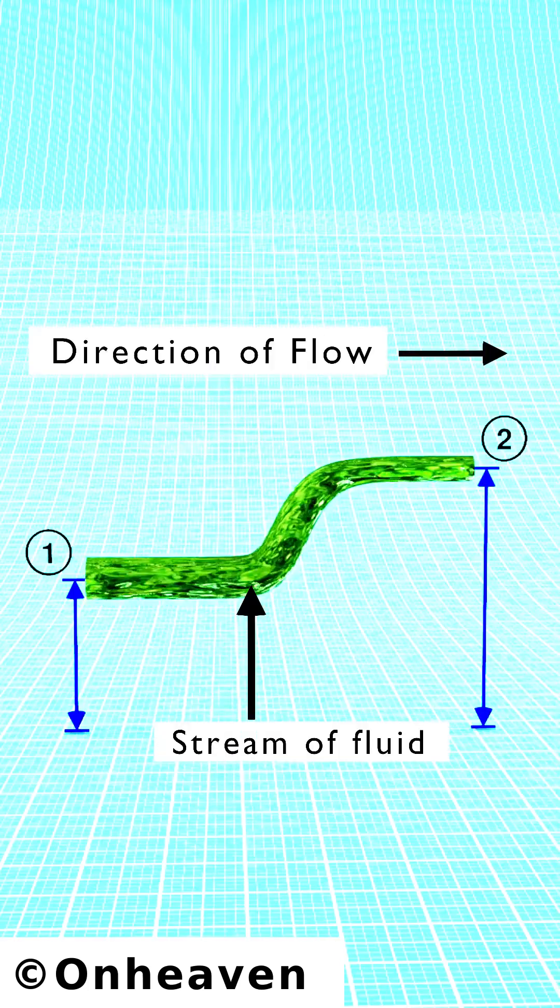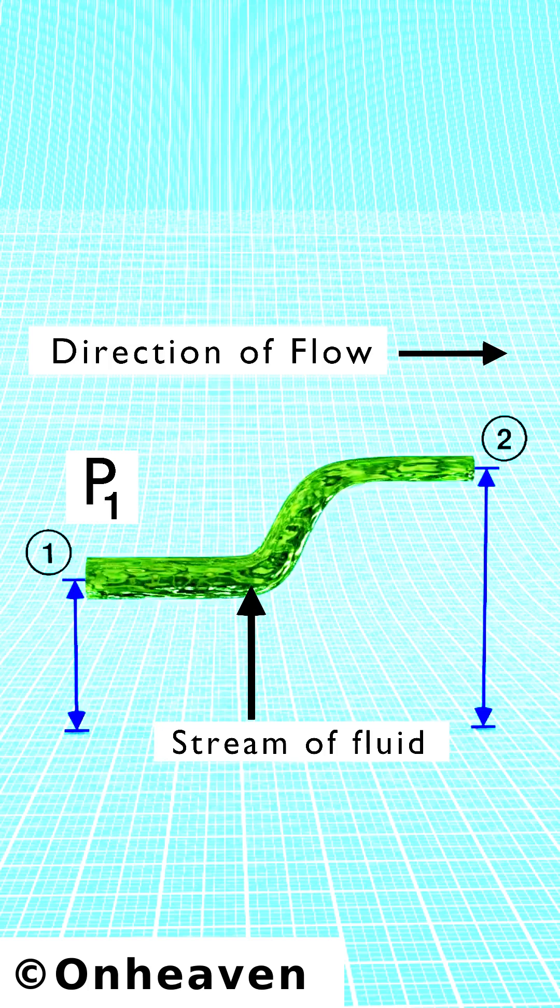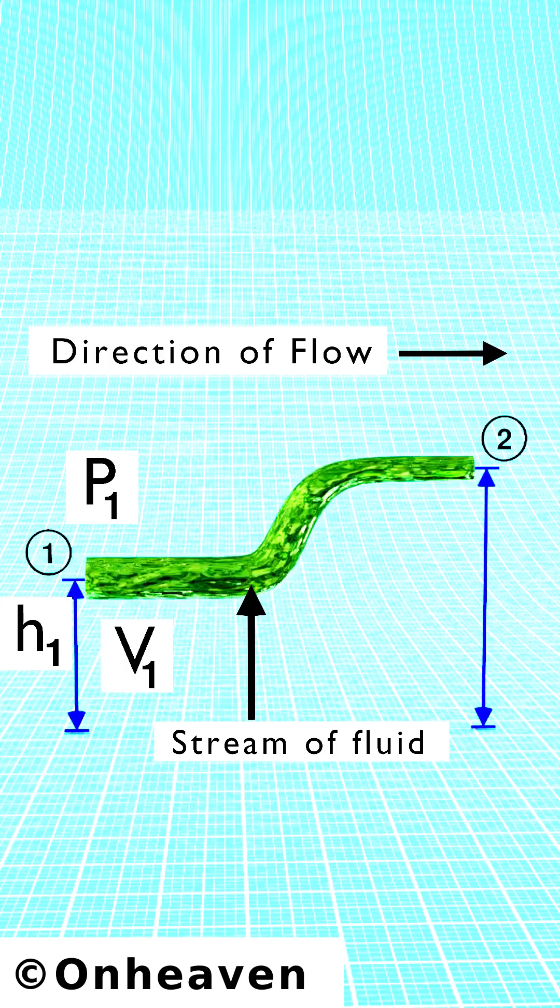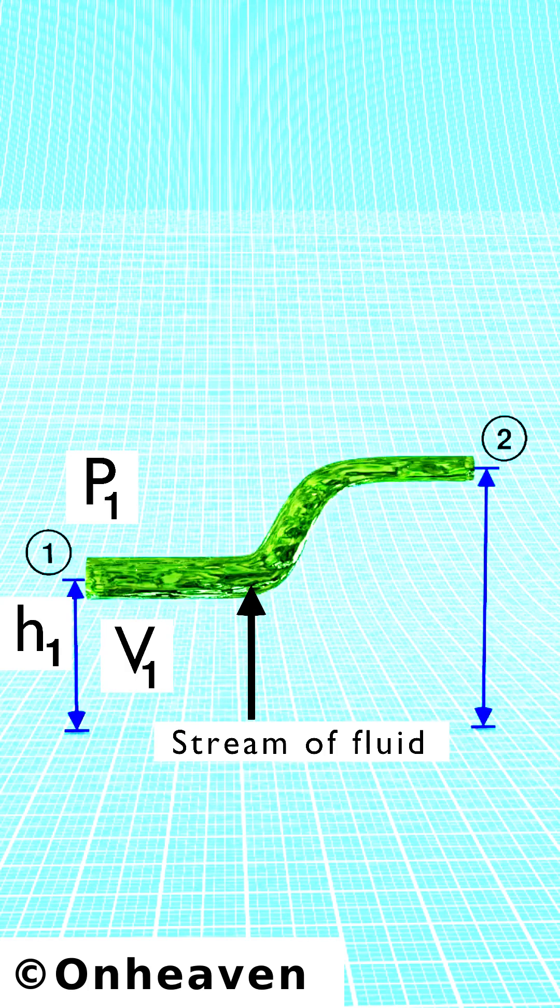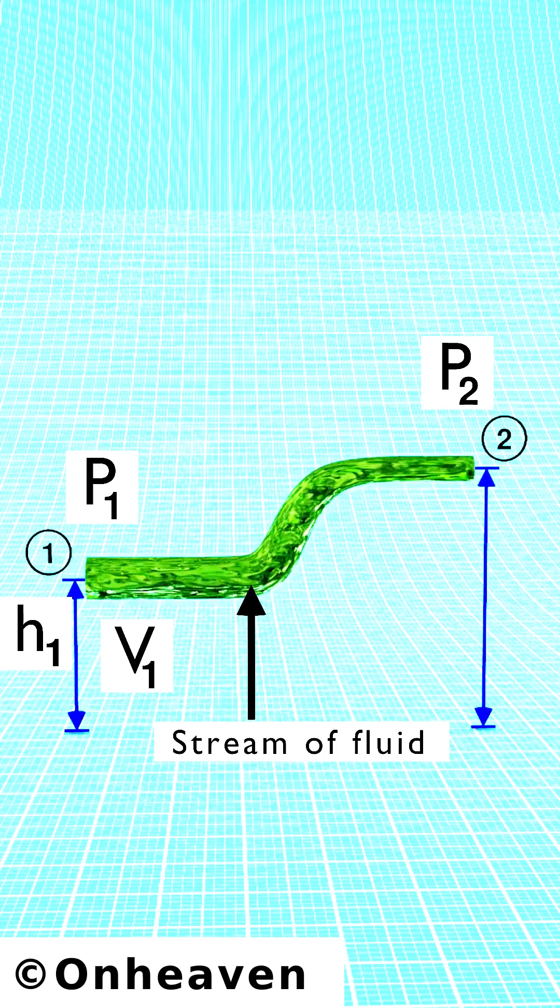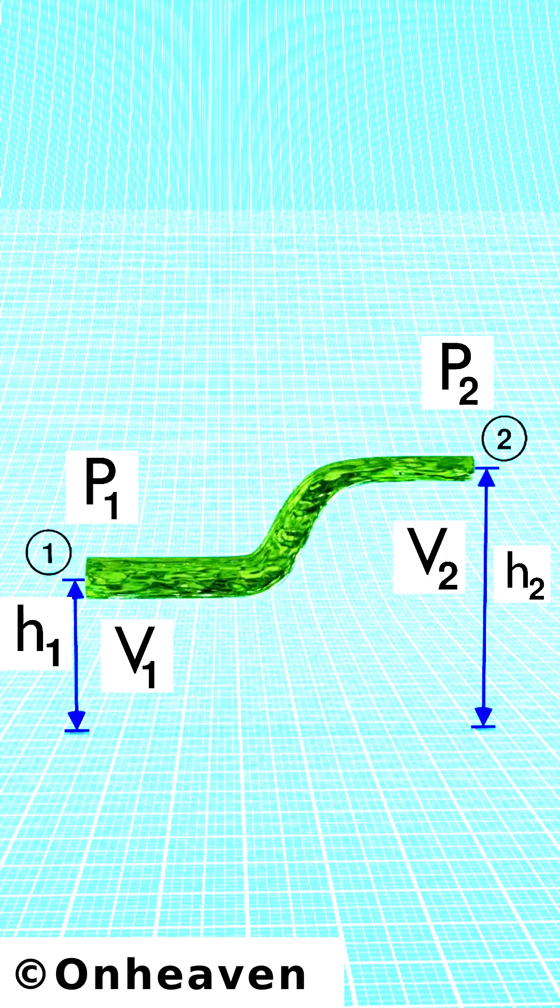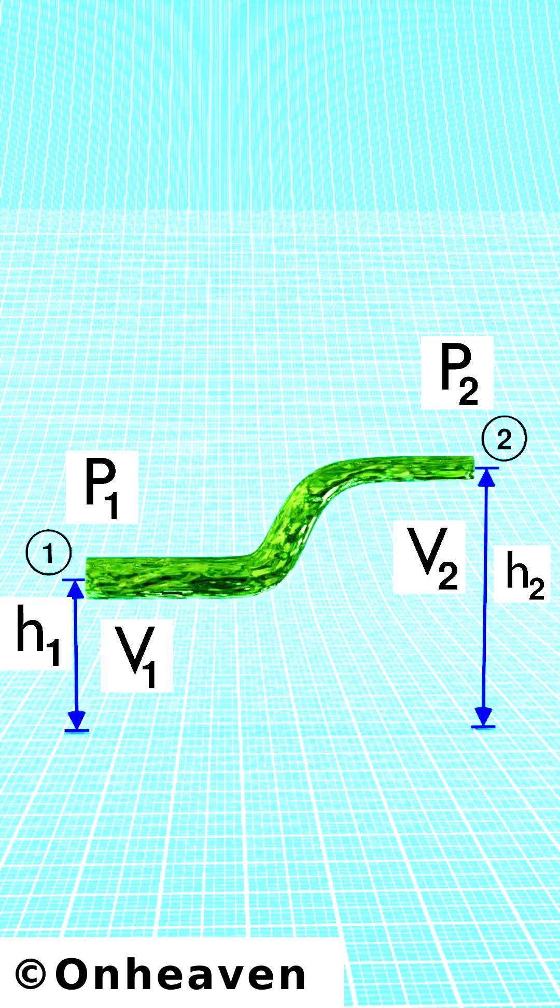If P1 is pressure at point 1, H1 is elevation height at point 1, V1 is velocity of fluid at point 1, and P2 is pressure at point 2, H2 is elevation height at point 2, V2 is velocity of fluid at point 2.